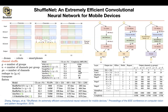Student: For depthwise convolutions, there's just one filter per channel — is that correct? Yes, exactly — one filter per channel.